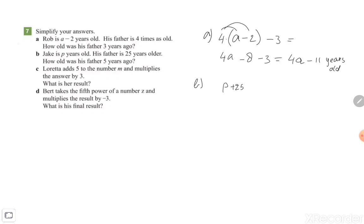How old was his father 5 years ago? So minus 5. Now simplify your answer: p plus 20, and then of course years old again because we talked about an age.